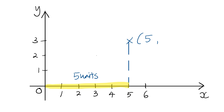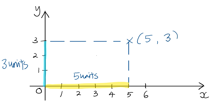I'm going to draw some horizontal dotted lines from the point to the y-axis. The vertical distance will be 3 units. Hence, the y-coordinate of this point will be 3. So a point comprises of the x-coordinate and also the y-coordinate. Let's try another point.